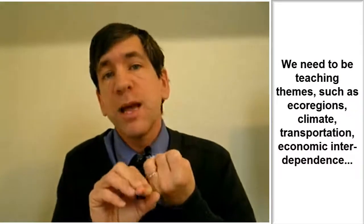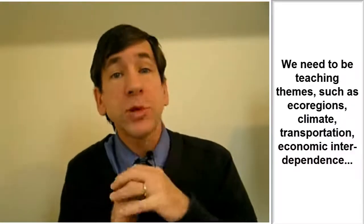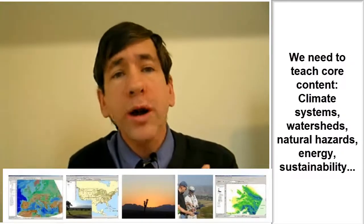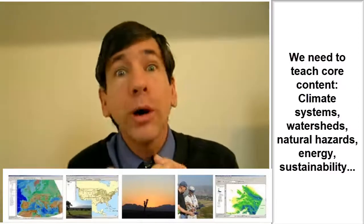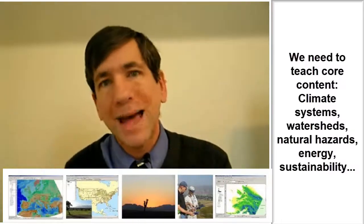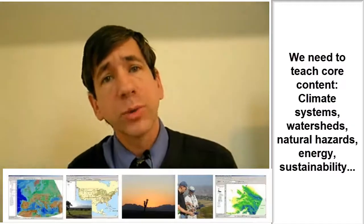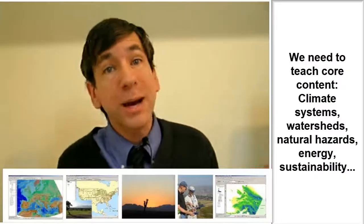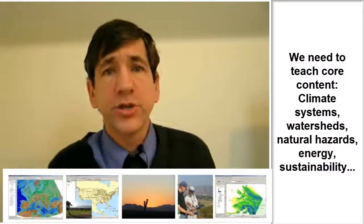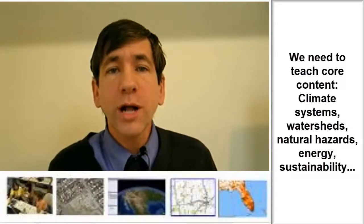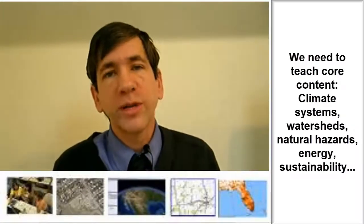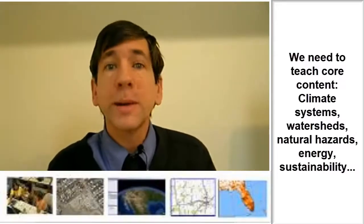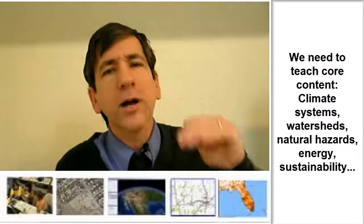So what I contend that we need to be teaching are themes — various themes: ecoregions, climate, transportation, economic interdependencies, and so on. Also we need to teach about core content. What are cyclones and hurricanes? How do they form? How do they develop? What are watersheds and how are those connected to river flow and weather patterns? What are natural hazards and what are the patterns and relationships of natural hazards? And why do humans seem to be coming into more and more frequent conflict, impacted more and more frequently by natural hazards? What about energy? How do we derive our energy? How are you watching this video? What powers the computer or the tablet or the phone that you're watching this video on? How are those things developed and interconnected and how can we develop sustainable energy? And on the topic of sustainability, what about sustainable agriculture or sustainable tourism? All these things are core content that I believe we need to be teaching.